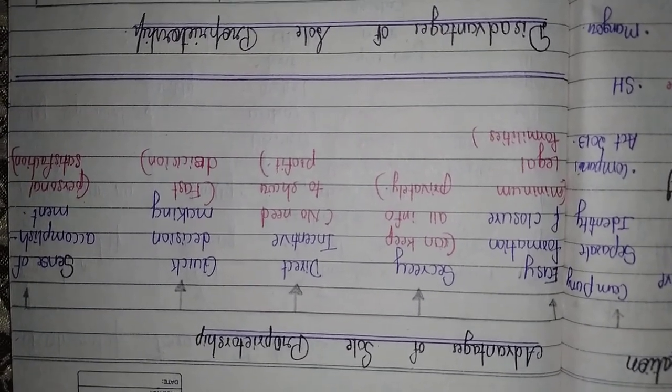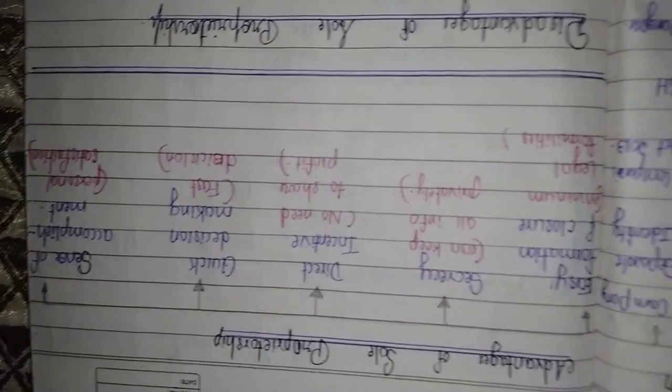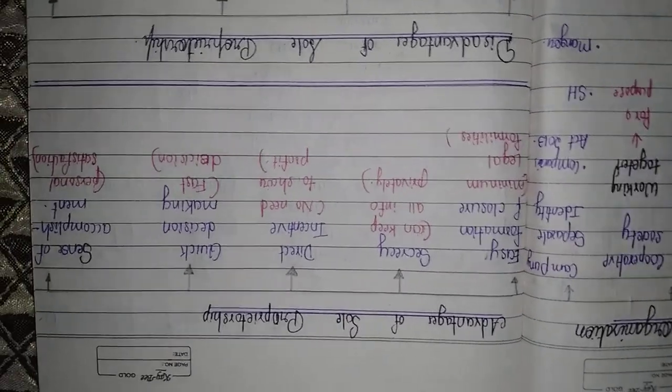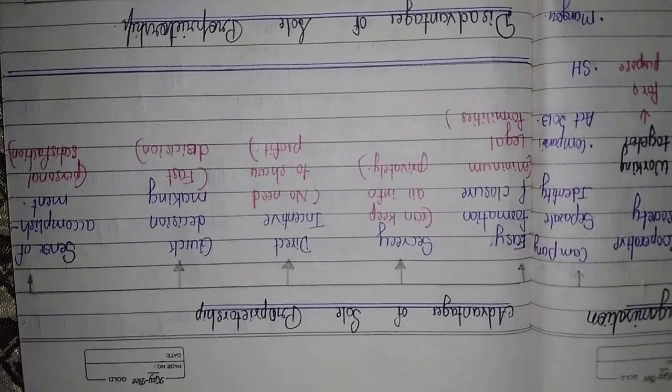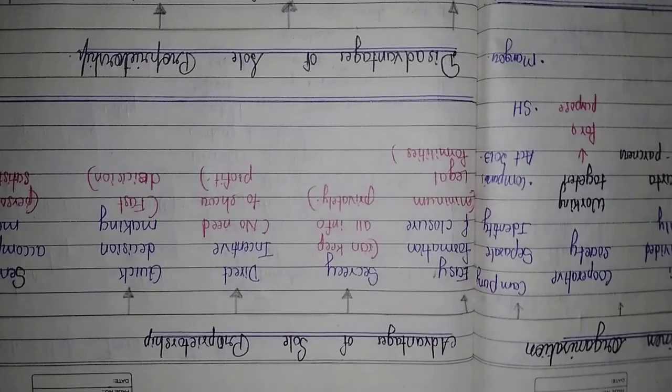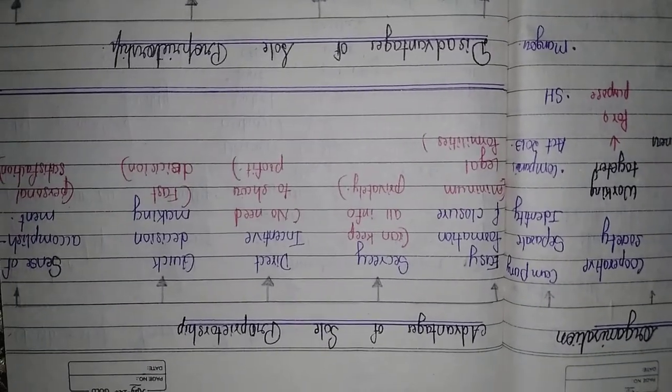Second point is secrecy. You can keep all your information private. Third one is direct incentive. No need to share profit with others. You can earn the profit directly and only it will belong to you.